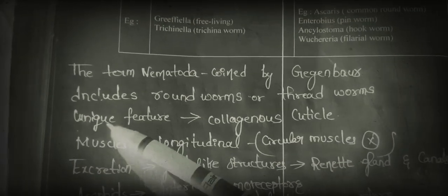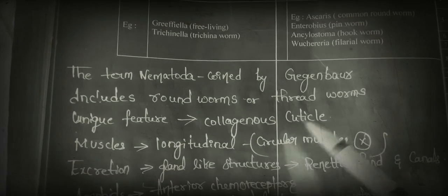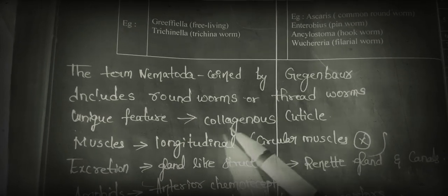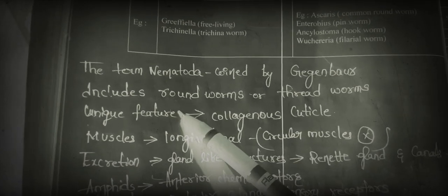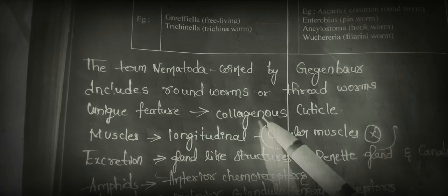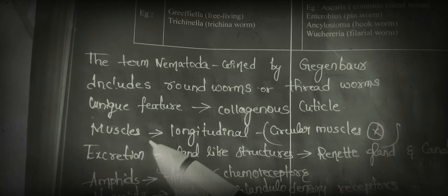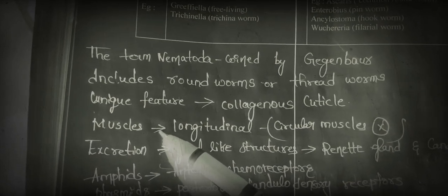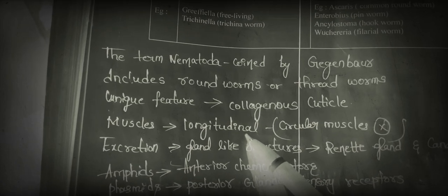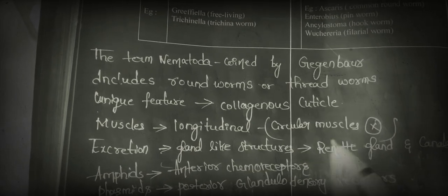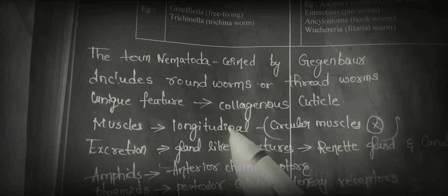The unique feature of phylum Nematoda is the presence of a collagenous cuticle — a cuticle which is made up of collagen. The muscles present in phylum Nematoda are only longitudinal muscles; circular muscles are absent.